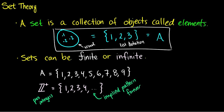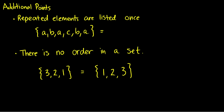Those are really the fundamental notions of sets. Now there are some additional points: repeated elements are only listed once. So if we have a set {A, B, A, C, B, A}, even though A is repeated three times we only write it once, B is repeated twice we only write it once, and C is repeated once.